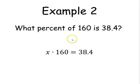So what percent of 160 is 38.4? The equation we get from this is x times 160 equals 38.4. Notice the first thing says what percent. Well, we don't know what percent. And when we don't know what percent or what number, we're going to use a variable. So we get x.